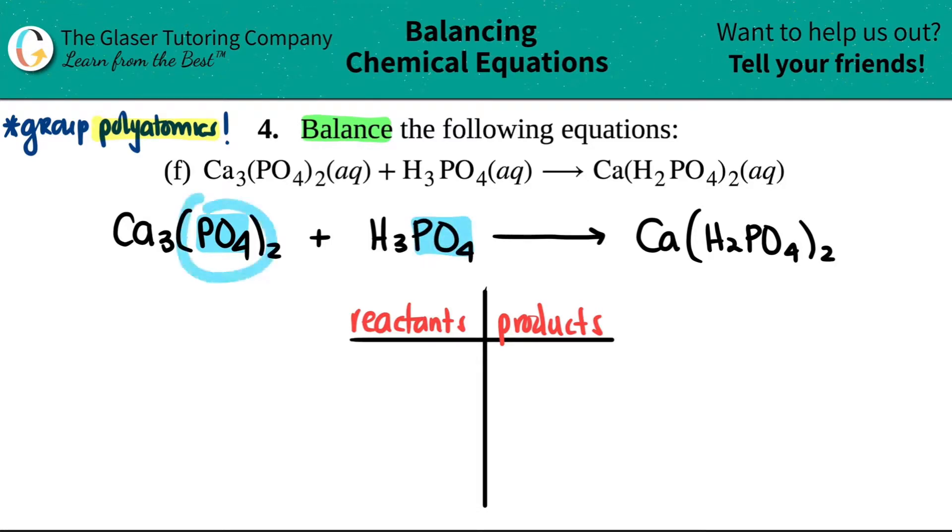Through tons of practice, I recognize that PO₄ is a polyatomic—PO₄ is phosphate. I see it here, again here, and again here. So instead of writing P and O separately, I'm going to group my polyatomic PO₄. It's going to make things much more easy.